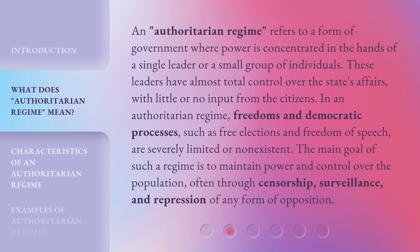In an authoritarian regime, freedoms and democratic processes, such as free elections and freedom of speech, are severely limited or non-existent. The main goal of such a regime is to maintain power and control over the population, often through censorship, surveillance, and repression of any form of opposition.